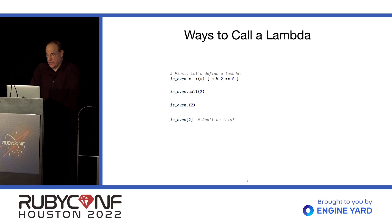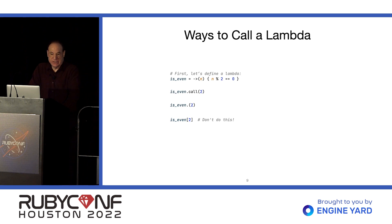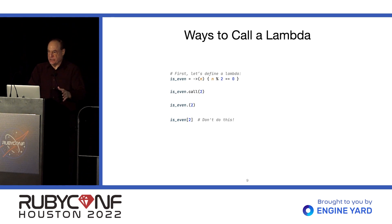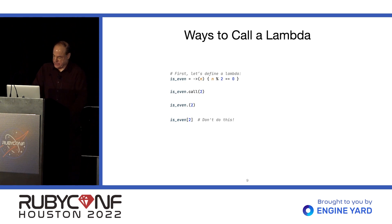You can also, strangely, call a Lambda by using square brackets. But please don't do this, because when most of us see square brackets, we think there's a collection that we're trying to find something in. Of course, if you're in a community where everybody's doing it and everybody understands it as a convention, then that's fine. But usually that's not the case.